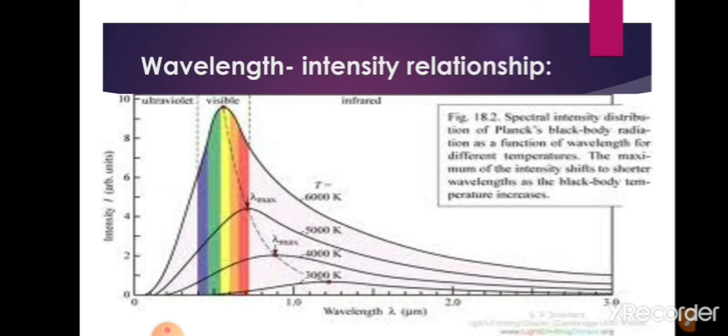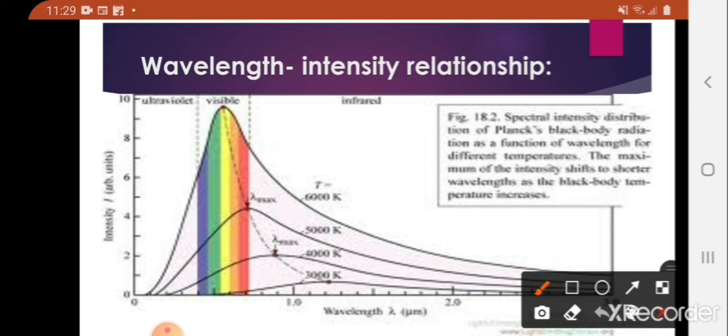From the graph, you can see that as temperature increases, the intensity peak shifts to left, that is to lower wavelength. As temperature increases, the intensity peak shifts to the region of lower wavelength.